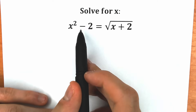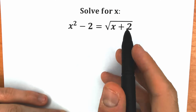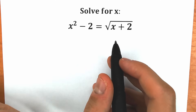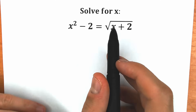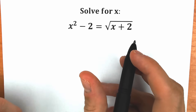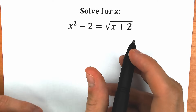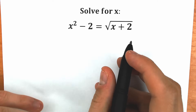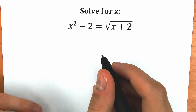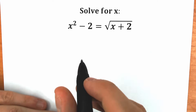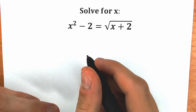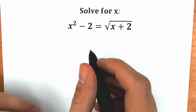We have x squared minus 2 equal to square root of x plus 2. A lot of students might say this is a very easy question — we just need to square both sides. I agree, but in my experience, a lot of students solve this question absolutely incorrectly because they forget about one really important moment. In this video I'm going to show you how to solve this correctly, step by step.